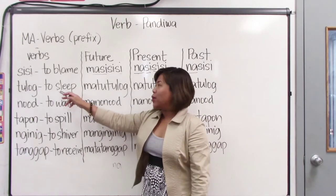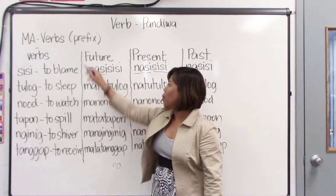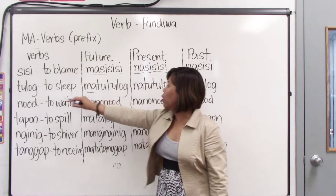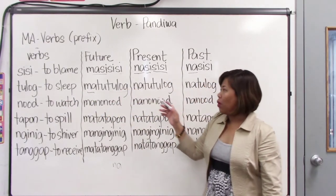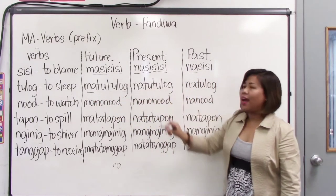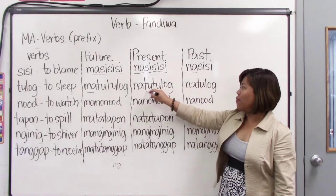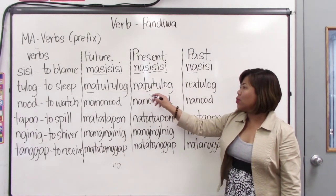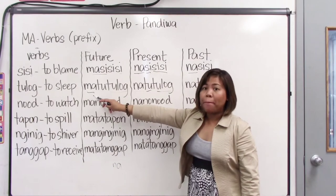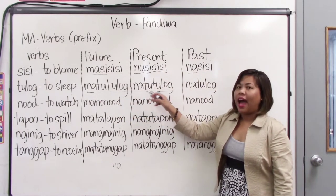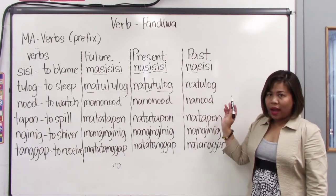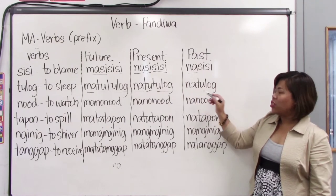Second: tulog. Tulog means to sleep. So we add the ma prefix, copy the first syllable to from the word tulog, then copy the entire verb tulog. It becomes matutulog. The present uses prefix na — natu — and then the entire verb tulog: natutulog. Future: matutulog. Present: natutulog. And past: natulog — without repeating the first syllable.